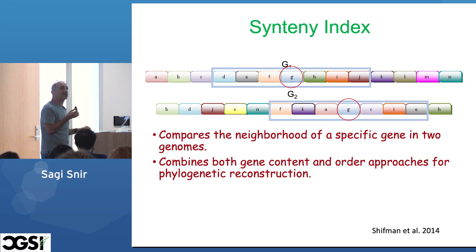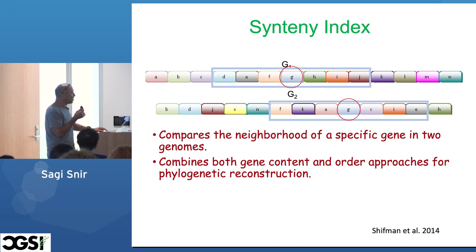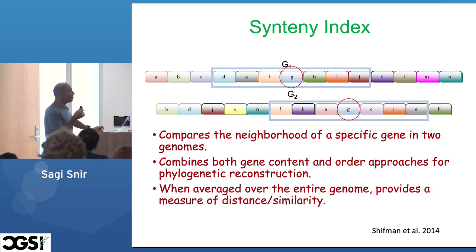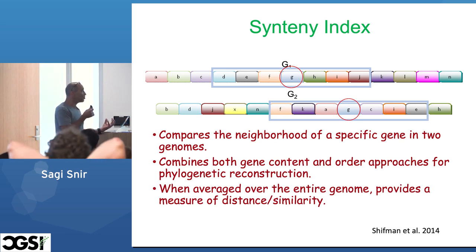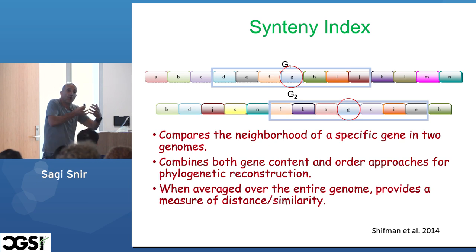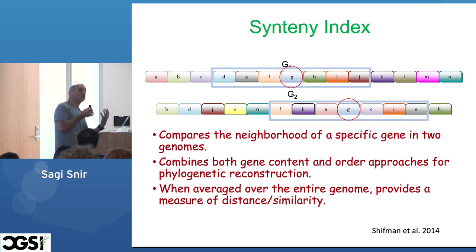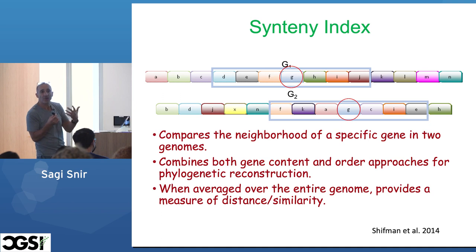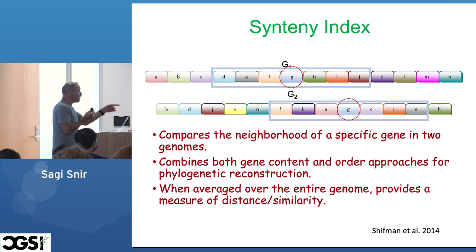The Synteny index gained quite decent acknowledgement. When averaged over the entire genome, it provides a measure of distance or similarity — how many genes among the entire gene pool are shared, and how similar their neighborhoods are. For a shared gene, we compare its neighborhood. For instance, if you take identical genomes, the Synteny index will be one if normalized.